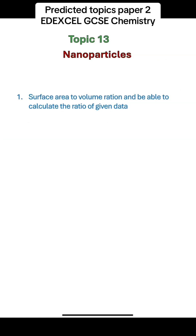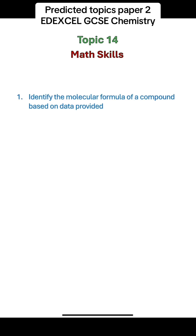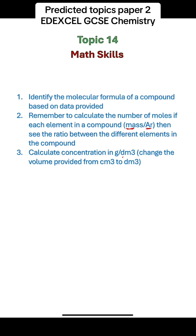Nanoparticles — a very common exam question. You should know what surface area to volume ratio is and be able to calculate it from given data. You should know the advantages and uses of nanoparticles, and also the controversy around their use, such as unknown long-term effects and insufficient testing. Finally, for math skills, you should be able to identify the molecular formula of a compound from data by calculating the number of moles of each element using mass divided by relative atomic mass, then finding the ratio between elements. Also remember to calculate concentration in grams per decimetre cubed and to convert volumes from centimetres cubed to decimetres cubed.